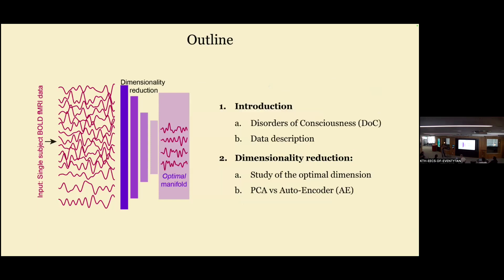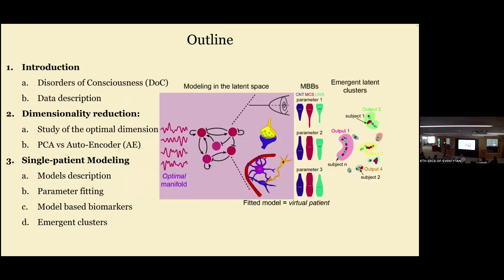The outline is: I'll briefly cover disorders of consciousness — Hako already did the introduction — then we'll talk about dimensionality reduction: why we want to do it, how to get to the latent reduced space, and what the best method and dimension would be. Then we'll build single-patient models — two different modeling approaches — followed by parameter fitting and some very preliminary results. Most of this is still ongoing, unpublished work, so any feedback is welcome. You can interrupt me at any time.